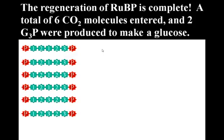So the regeneration of RUBP is complete. A total of six CO2 molecules entered the cycle, and two G3P were produced to make a single glucose. These five carbon molecules are now available to accept more CO2 and begin the cycle once again.